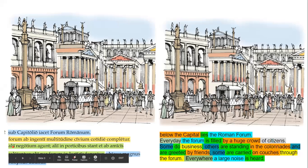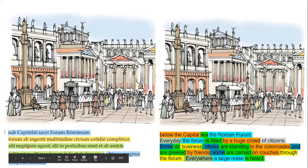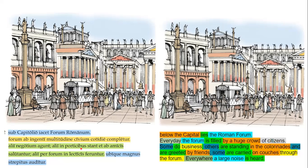'Alii' — so we see 'alii,' we immediately want to say 'some,' and then we're expecting another 'alii' — some and others. 'Alii agunt negotium' — that's an idiom we have to know. Literally they 'drive business,' but it should be translated 'some are doing business.' 'Alii stant in porticibus' — others stand in the porticos and the colonnades. These are the overhanging spots in front of buildings used for shade and often for business.